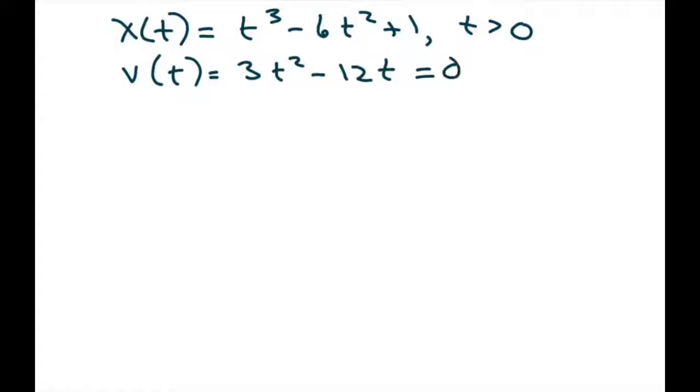We set this to 0 and factor. So we're going to factor out a 3t, and this will be t minus 4 equals 0. So t equals 0 or 4. Now originally we're supposed to go from